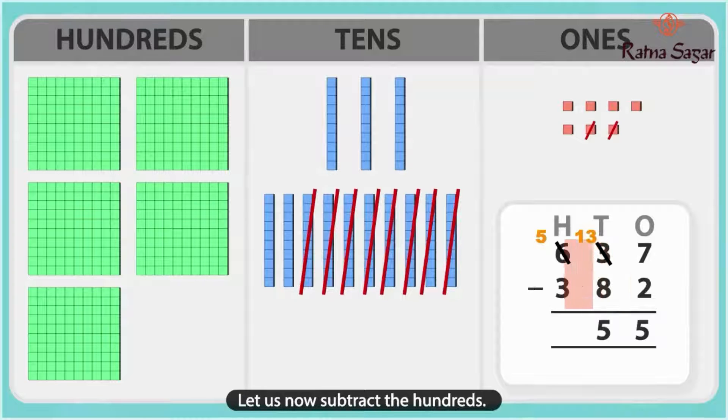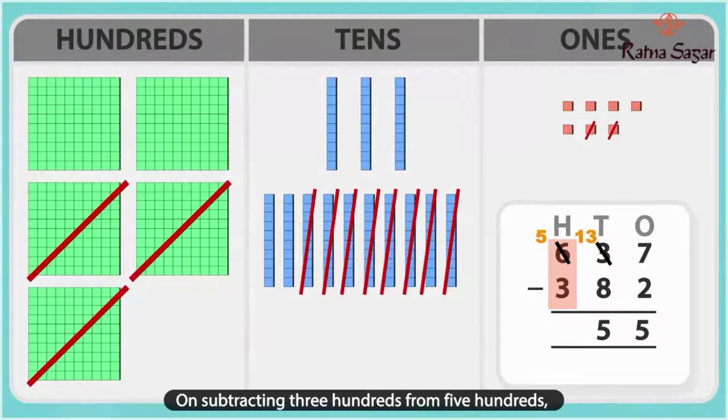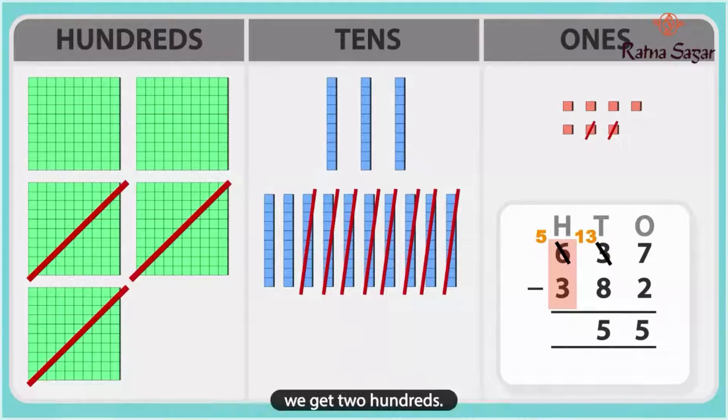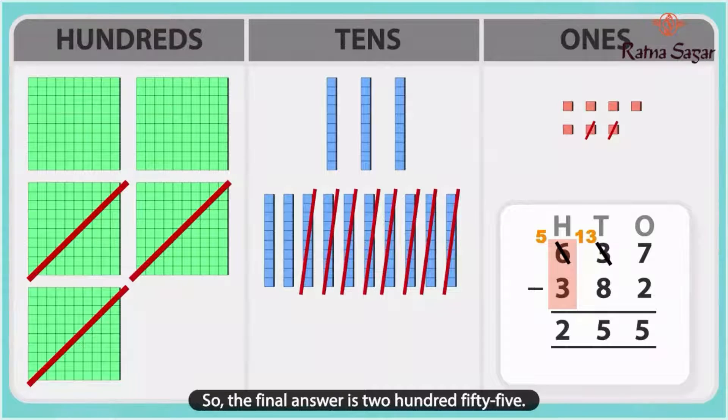Let us now subtract the hundreds. On subtracting 3 hundreds from 5 hundreds, we get 2 hundreds. So, the final answer is 255.